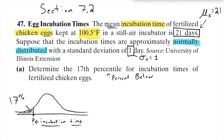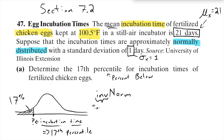Our answer is going to be a number of days — specifically the number of days such that 17% are less than it. Normal CDF can't do this because that requires giving it two values to get a percentage. We need a new function: the very next one underneath normal CDF, called INVNORM. The INV stands for inverse — it does the opposite.